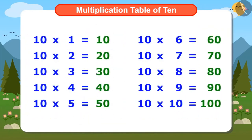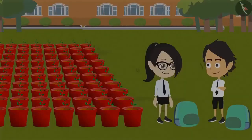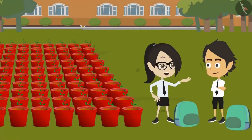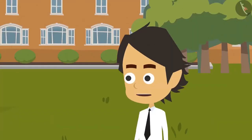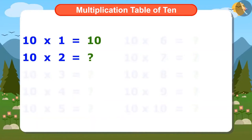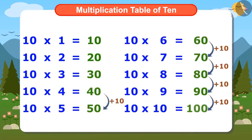Ayushman had written down the entire multiplication table of 10. Vandana knows another easy way to find the multiplication table of 10. If we add 10 to the first number 10 of the multiplication table of 10, we will get the second number, that is 20. And so, if we keep adding 10 to the numbers, we can know the multiplication table of 10.